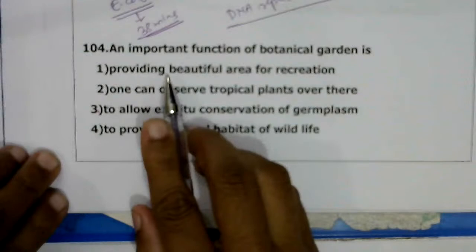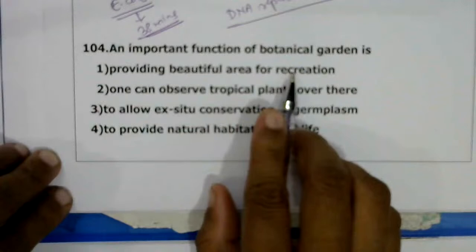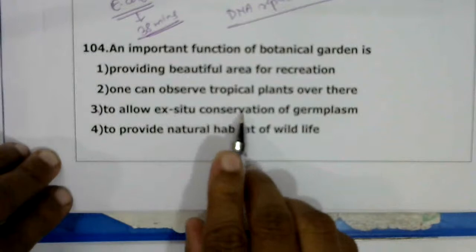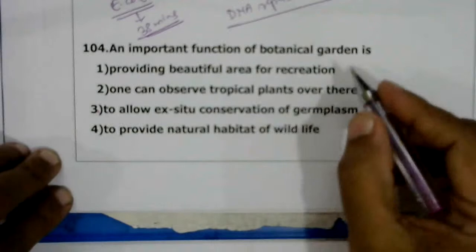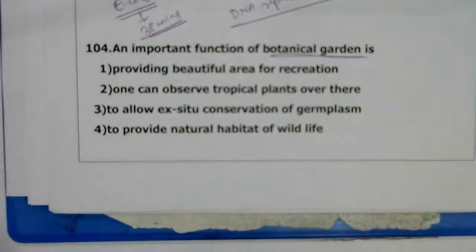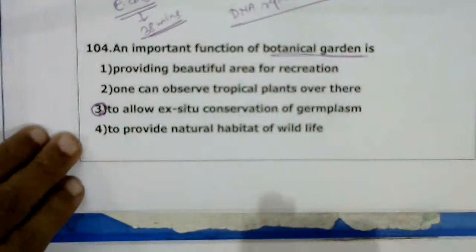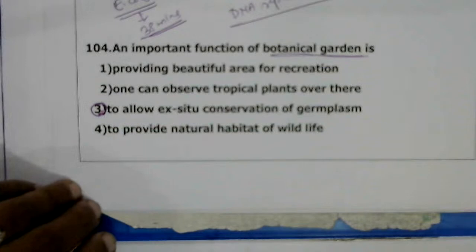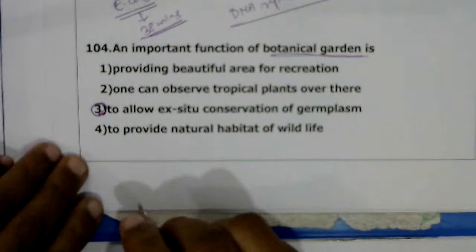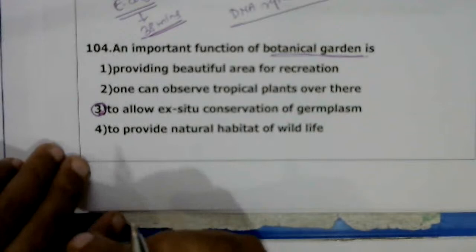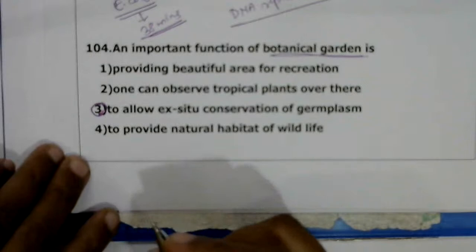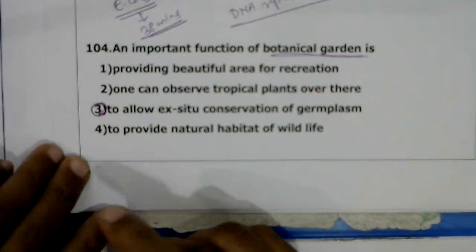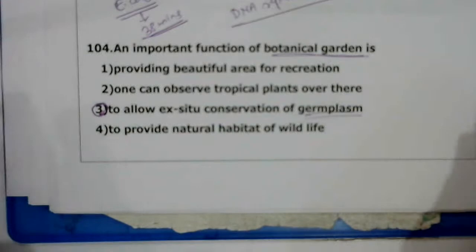Next question: an important function of botanical gardens is ex-situ conservation of germplasm. Botanical gardens serve as a taxonomical aid. Ex-situ conservation means protecting plant species outside their natural habitat — plants naturally growing in different habitats are cultivated in specialized gardens away from their natural environment. The correct answer is the third option.